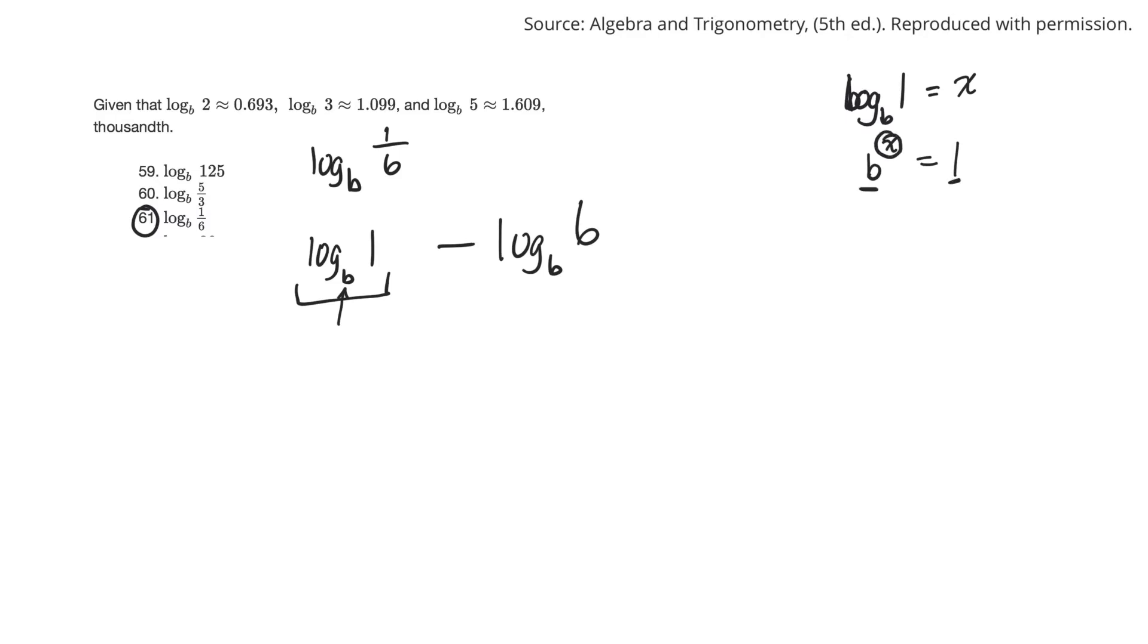Well, the only way or the only number you can put in there to get a 1, like if you put a 1, b to the first would just be b. But if you put a 0, anything to the 0 power is 1. Therefore, the answer to this, to what exponent must you raise b to get 1, is 0.